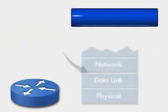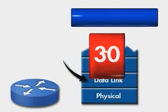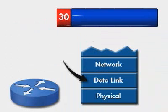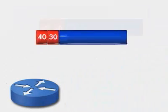Router B repackages the message at the data link layer, appending its own physical address, 40, as the source address, and adding the physical address of Router C as the destination address.